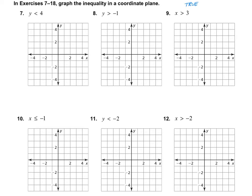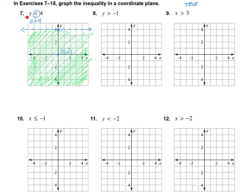Let's look at number seven: y is less than 4. That means we cross the y-axis at 4 and the line is horizontal. It is a less than sign, so we use a dashed line. I'll plug in (0, 0): zero is less than 4 is true, so we shade towards that point. Everything below the line y equals 4 is a solution to this inequality.